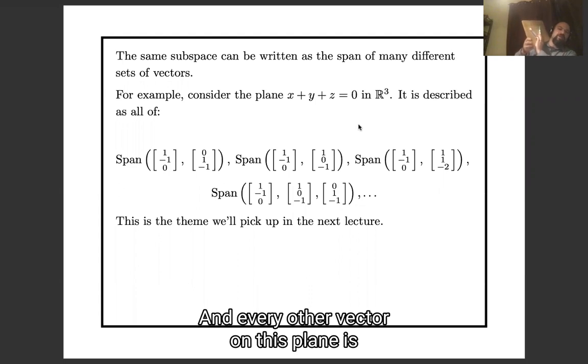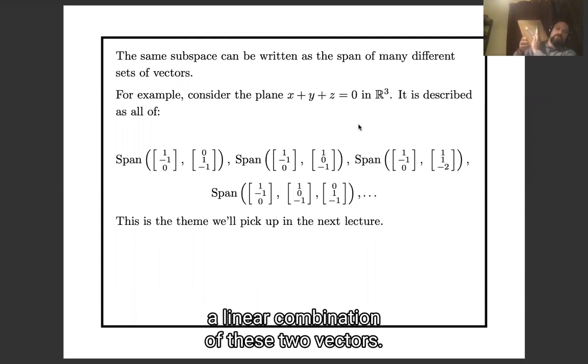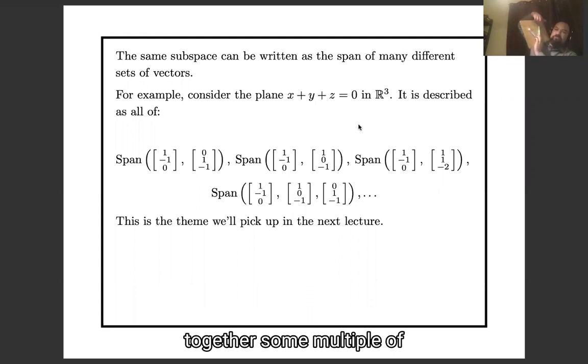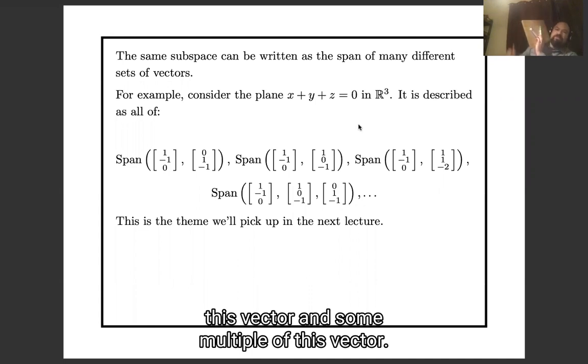And every other vector on this plane is a linear combination of these two vectors. I can get to any other point on this plane by adding together some multiple of this vector and some multiple of this vector.